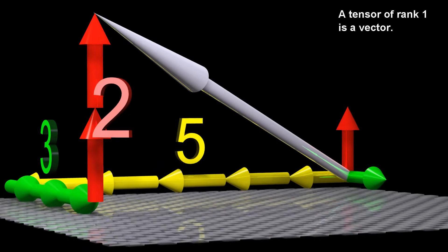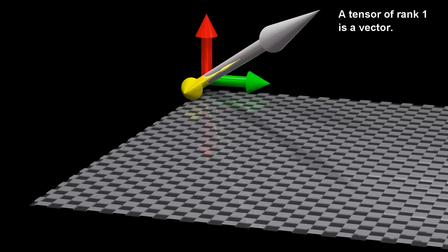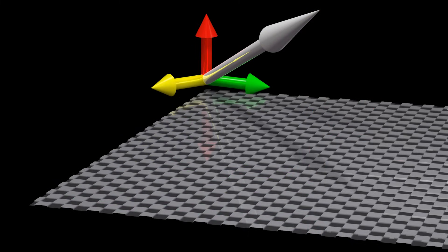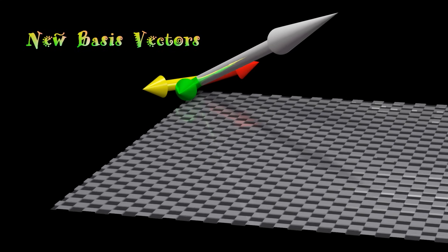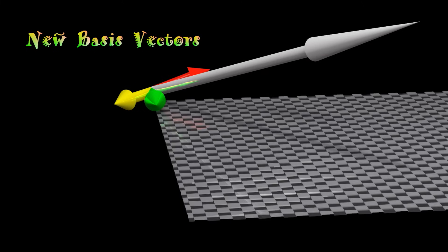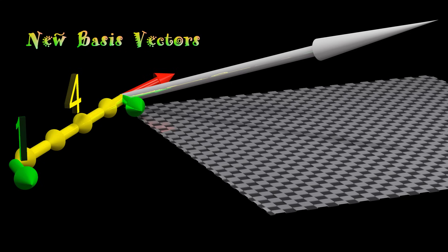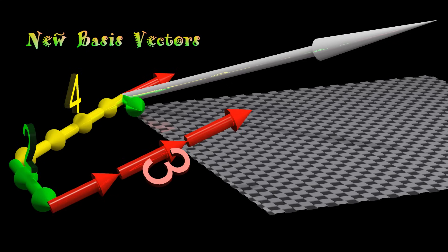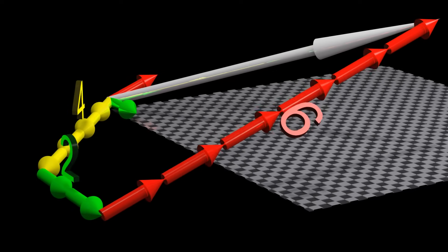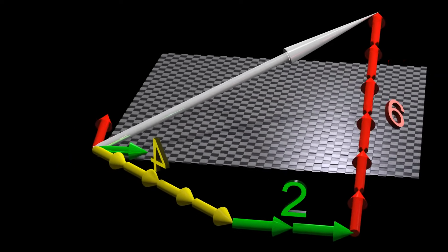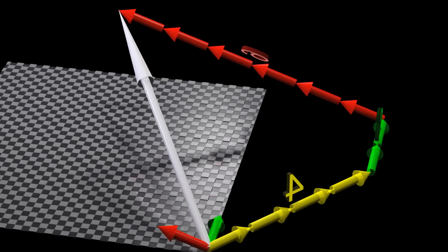A tensor of rank 1 is a vector. Let's pick new basis vectors. We typically describe a vector by how many of each of the basis vectors we have to add together to produce it. But there is also another way to describe a vector in terms of the basis vectors.